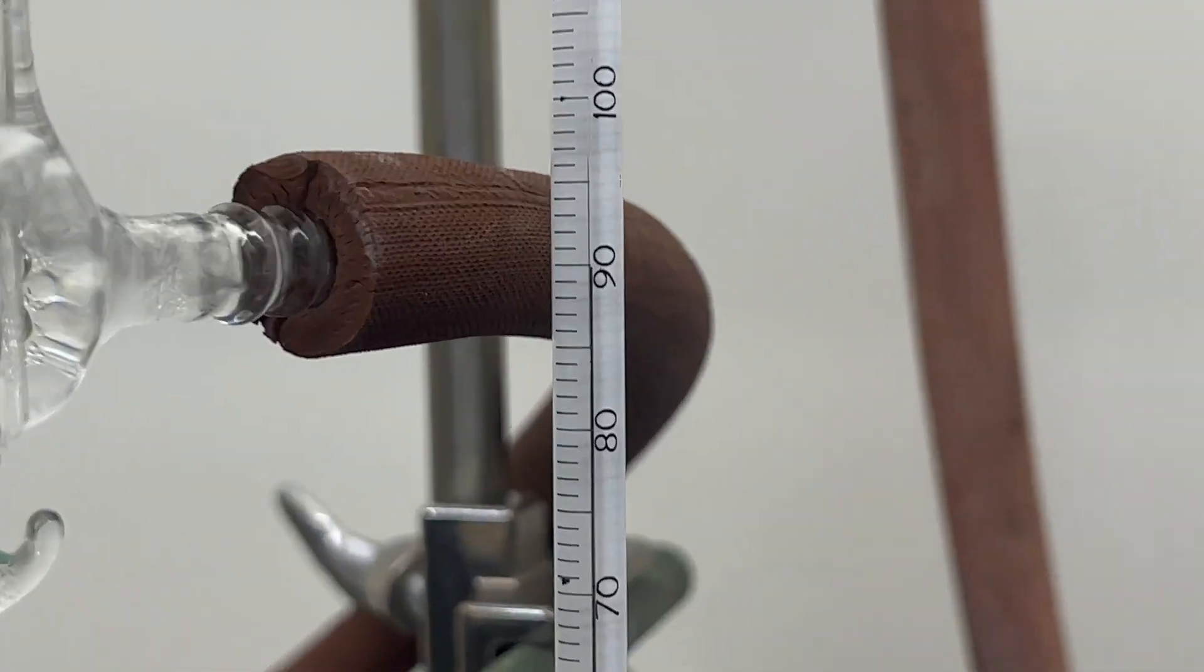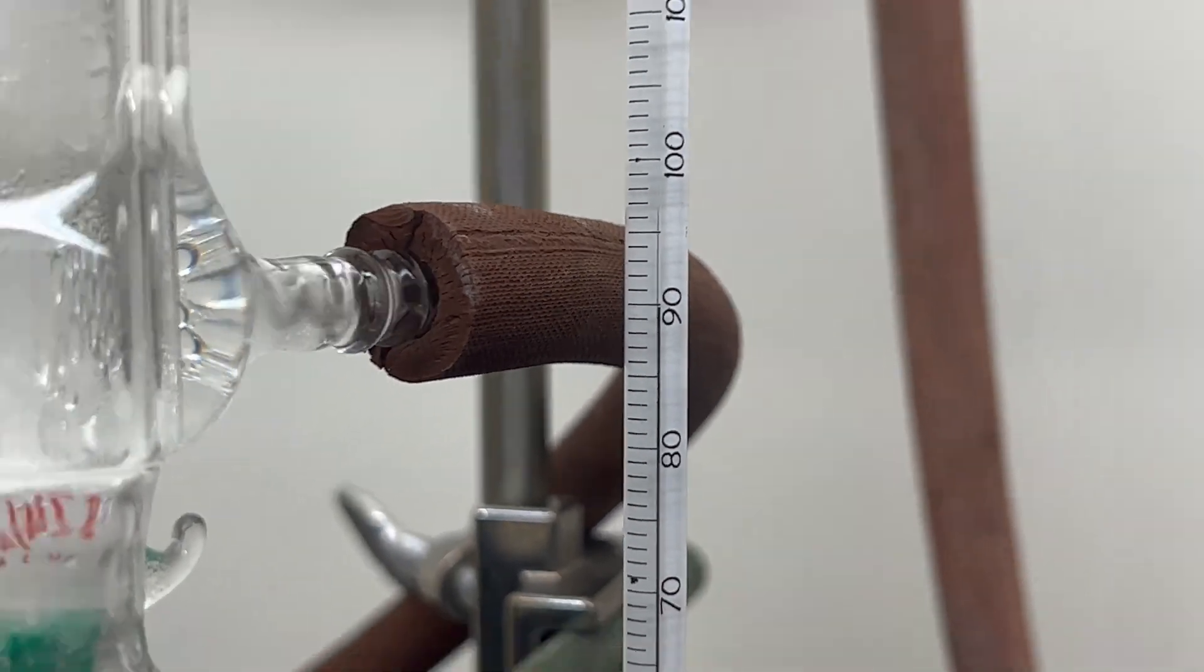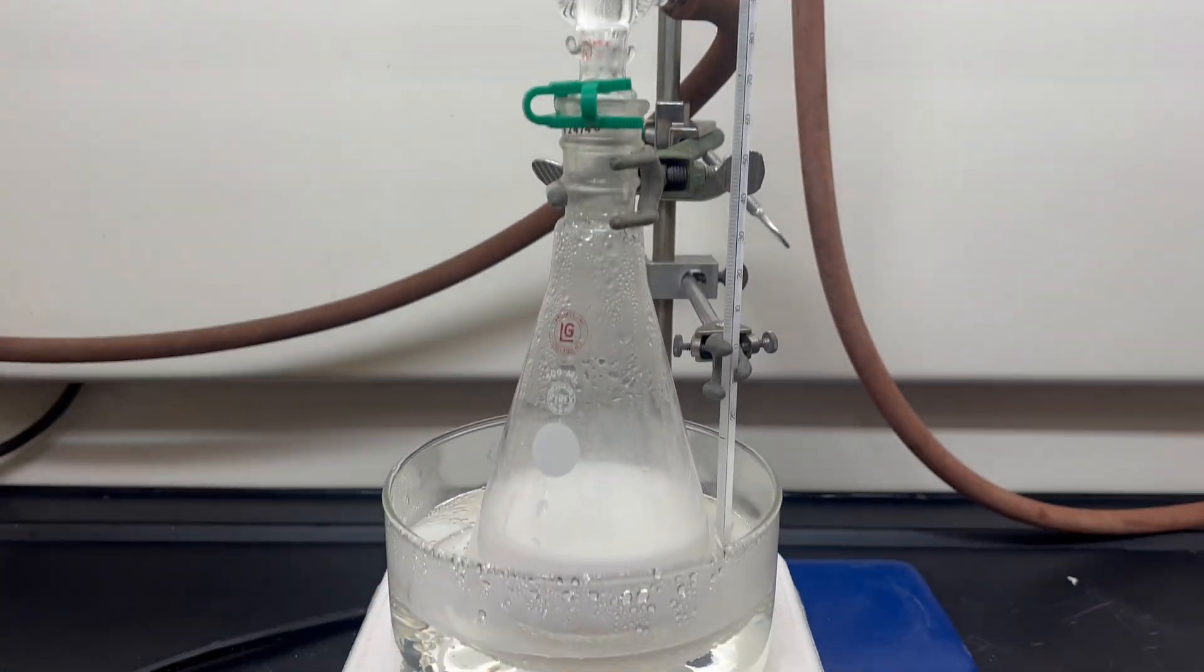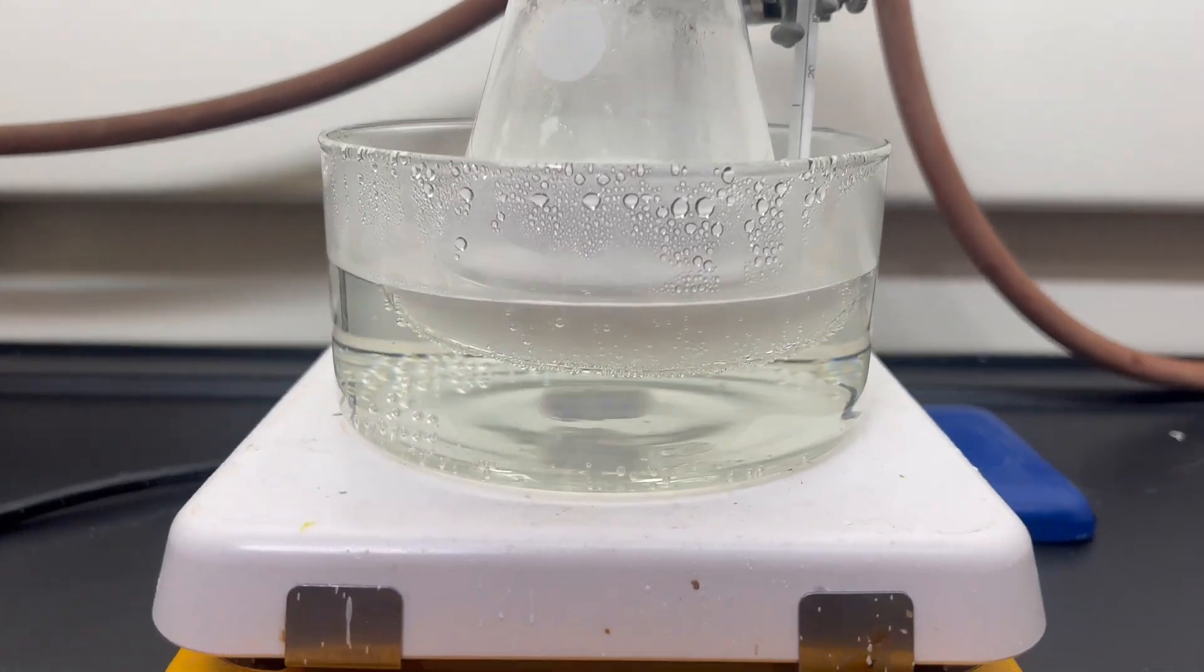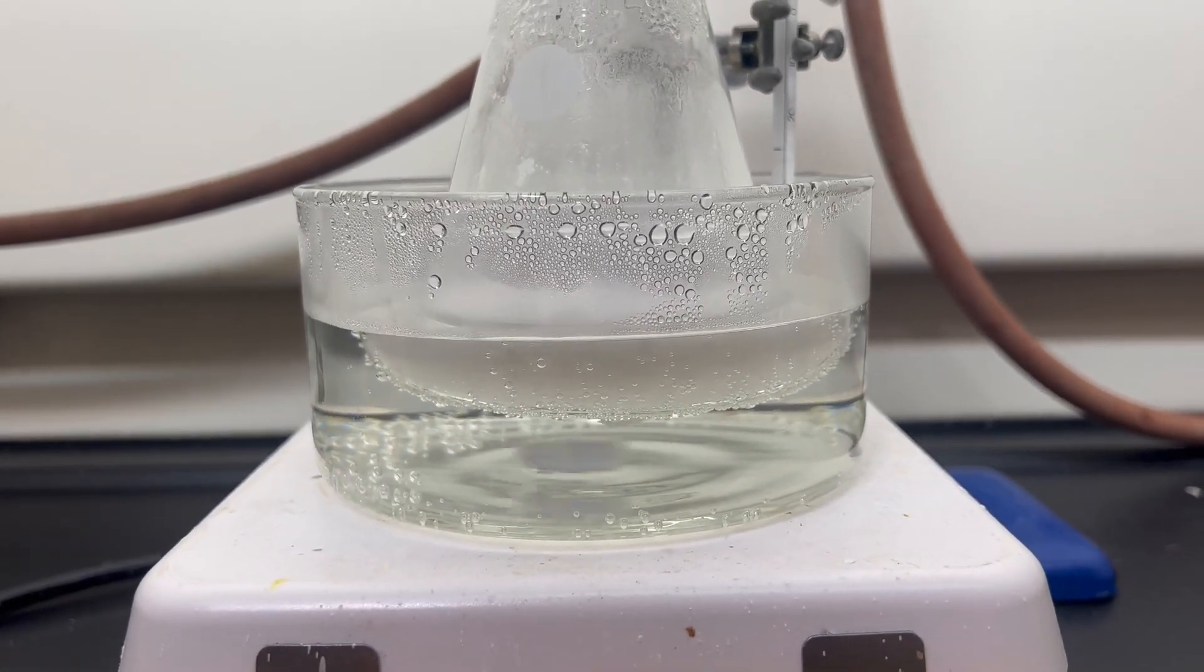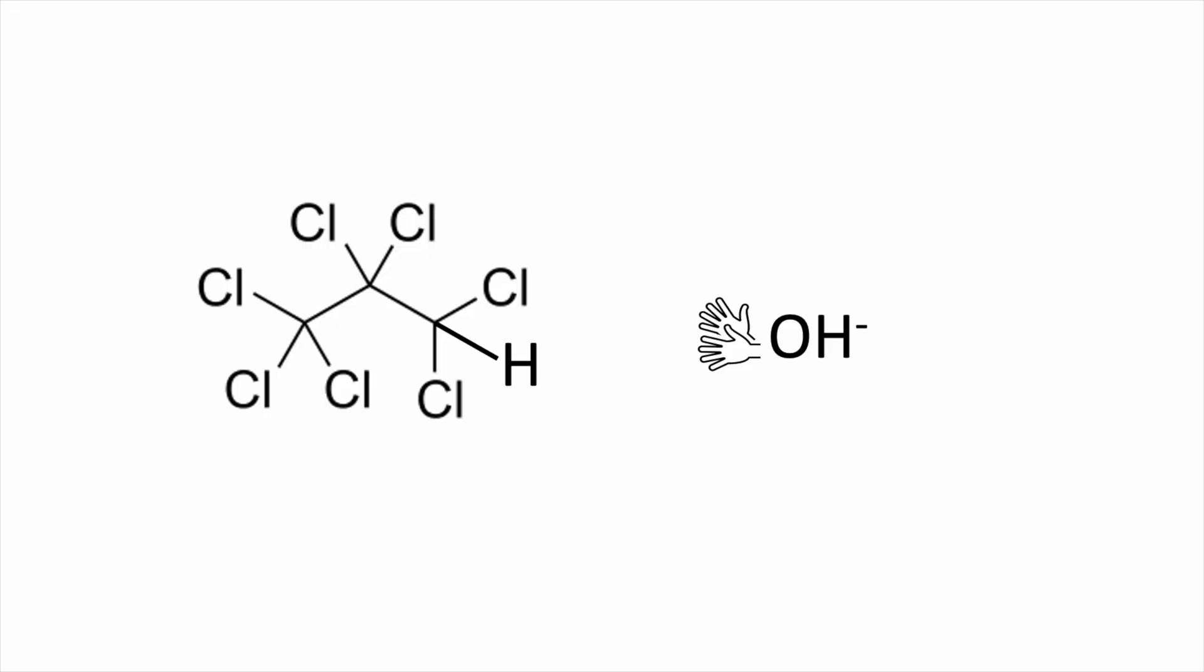In chemistry, when one reagent is used up first, it's known as the limiting reagent. In our case, that is the heptachloropropane. The reaction occurring here is the classic E2 reaction. The hydroxide ion grabs onto the hydrogen, ripping it off. At this point, electrons swing in, forming a double bond while kicking off the chlorine, because only four bonds can be attached to a carbon.